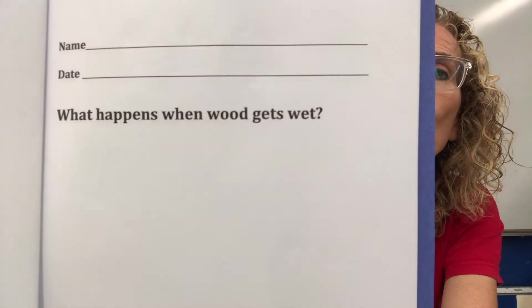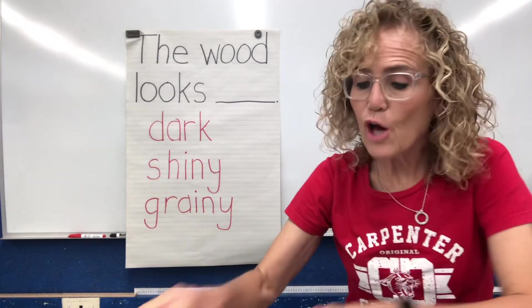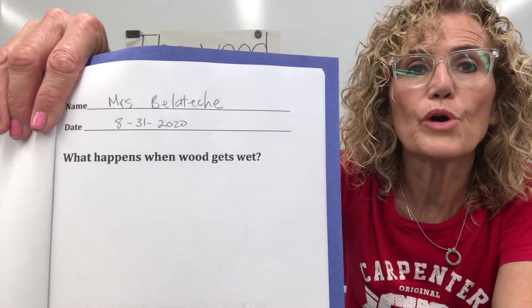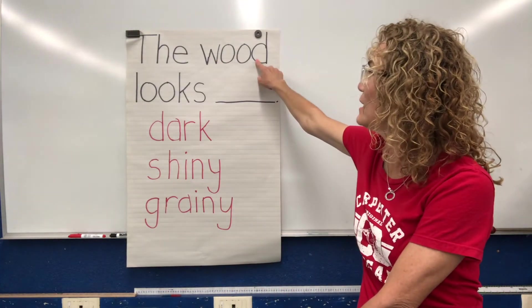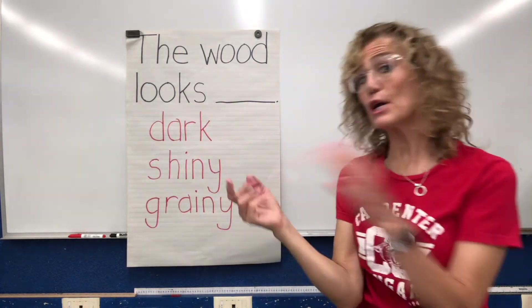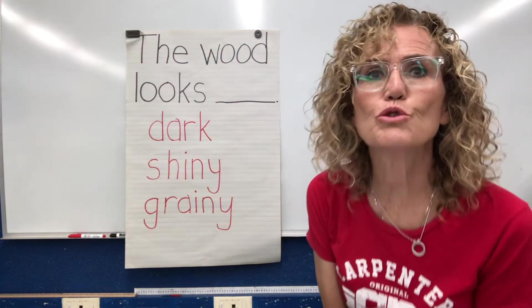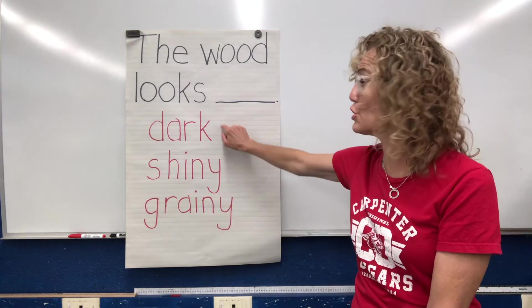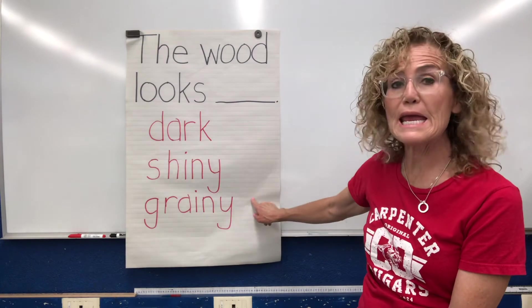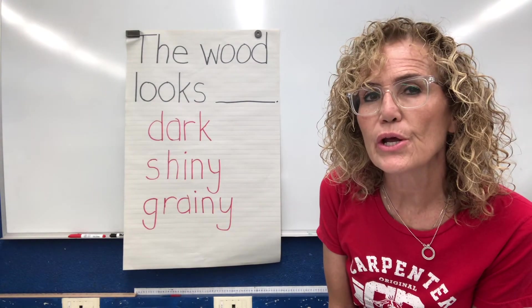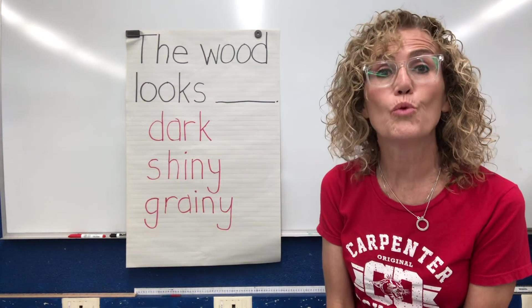So I want us to get our science notebook again. I'm going to open up the page — there's my first page — and I'm going to go to the second page: What happens when wood gets wet? To help you with your science journal, where the question is 'What happens when wood gets wet?', I have some beginning sentences you can use. You could write 'The wood looks' — and use your own ideas. Did you think the wood looks dark? Did you think the wood looks shiny? Did you think the wood looked grainy? Do you remember last week we talked about the grain of the wood?